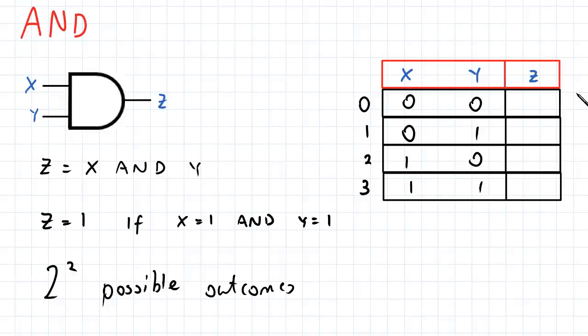For the resultant z: when neither input is 1, z is 0. When only y is 1, z is 0. When only x is 1, z is 0.